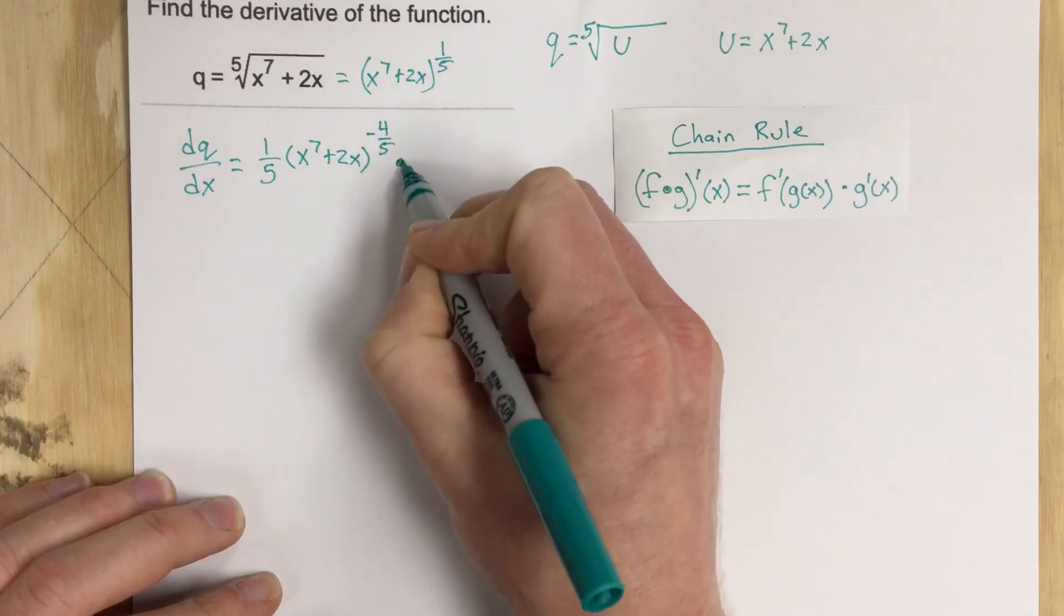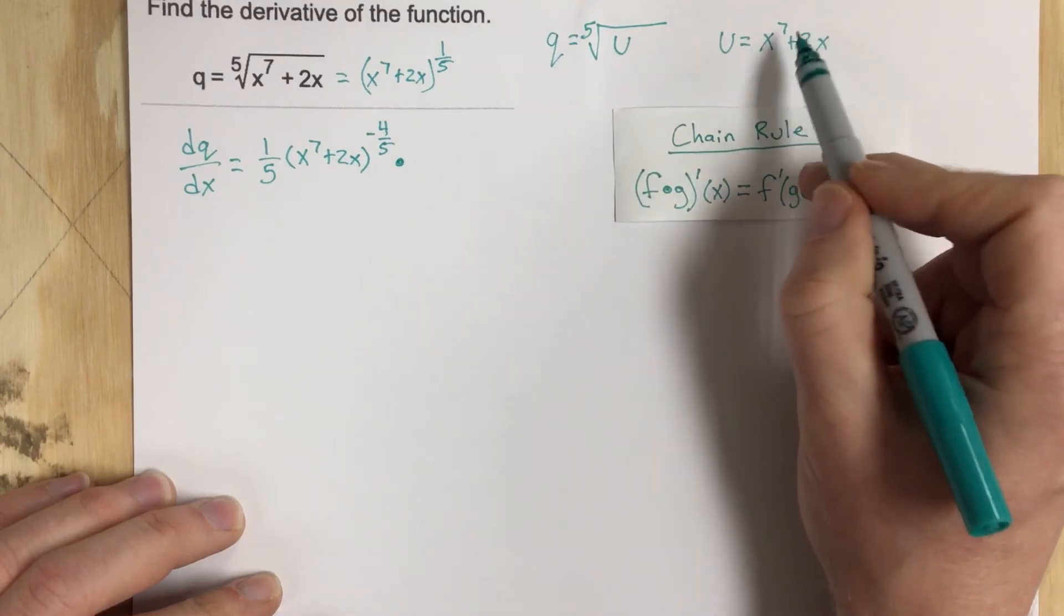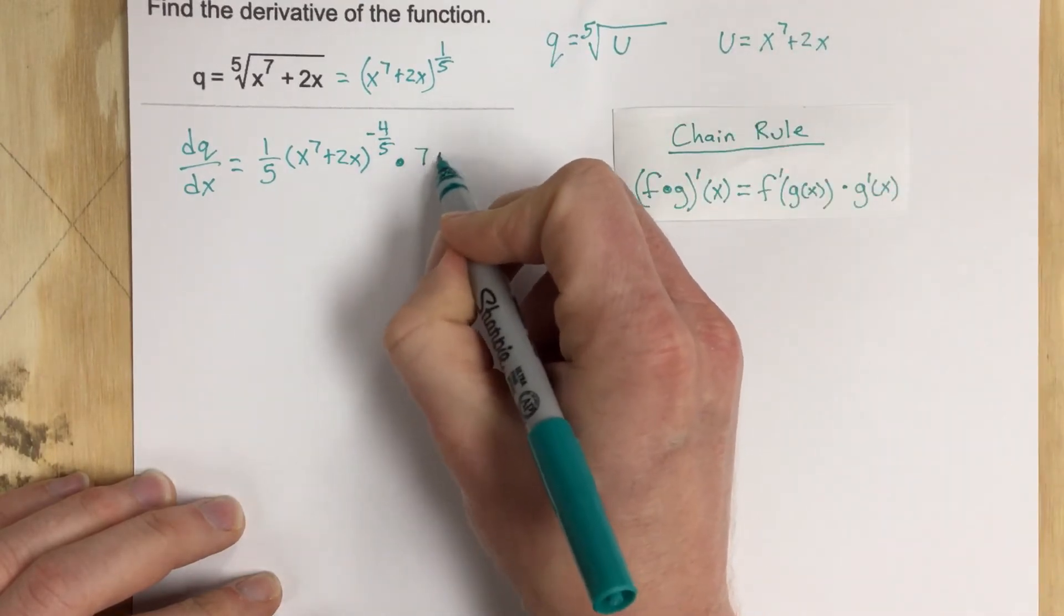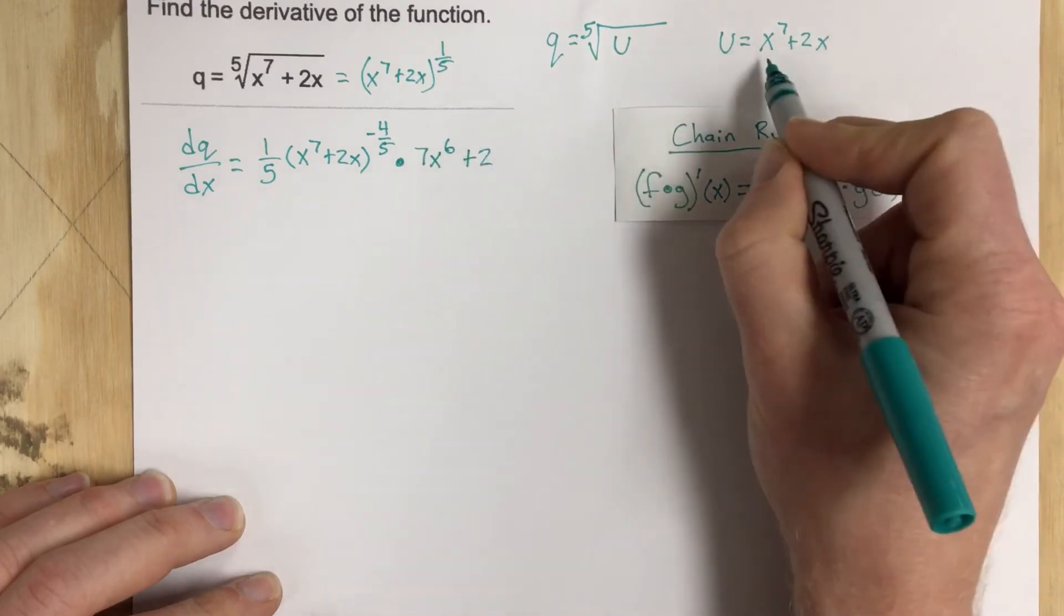Then we multiply this, so that's the derivative of the outside, that's what we did, we did the fifth root function. Derivative of the inside is then going to be 7X to the sixth power plus 2, we can do this derivative here.